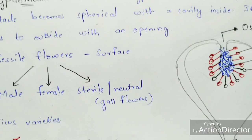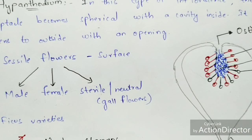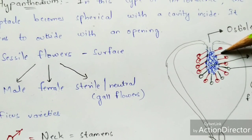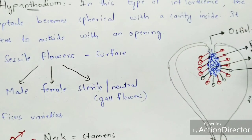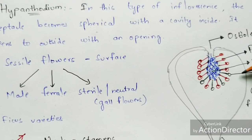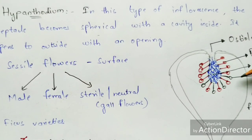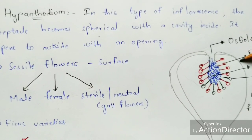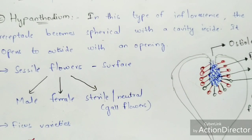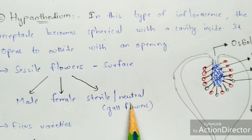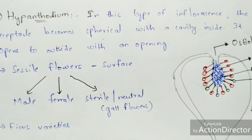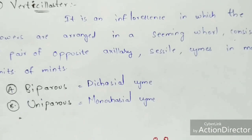Regarding pollination in hypanthodium: when eggs fall on the gall flowers — the black-colored ones — pollination occurs. But when eggs fall upon the fertile female flowers, cross-pollination occurs. So remember: eggs on gall flowers triggers pollination, eggs on fertile female flowers triggers cross-pollination.